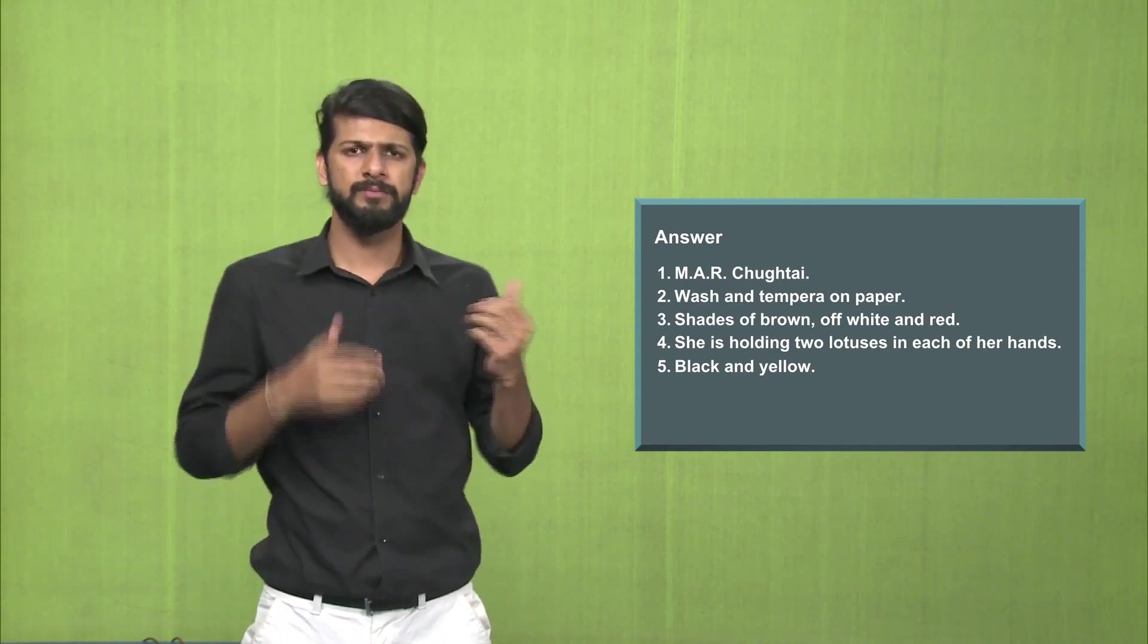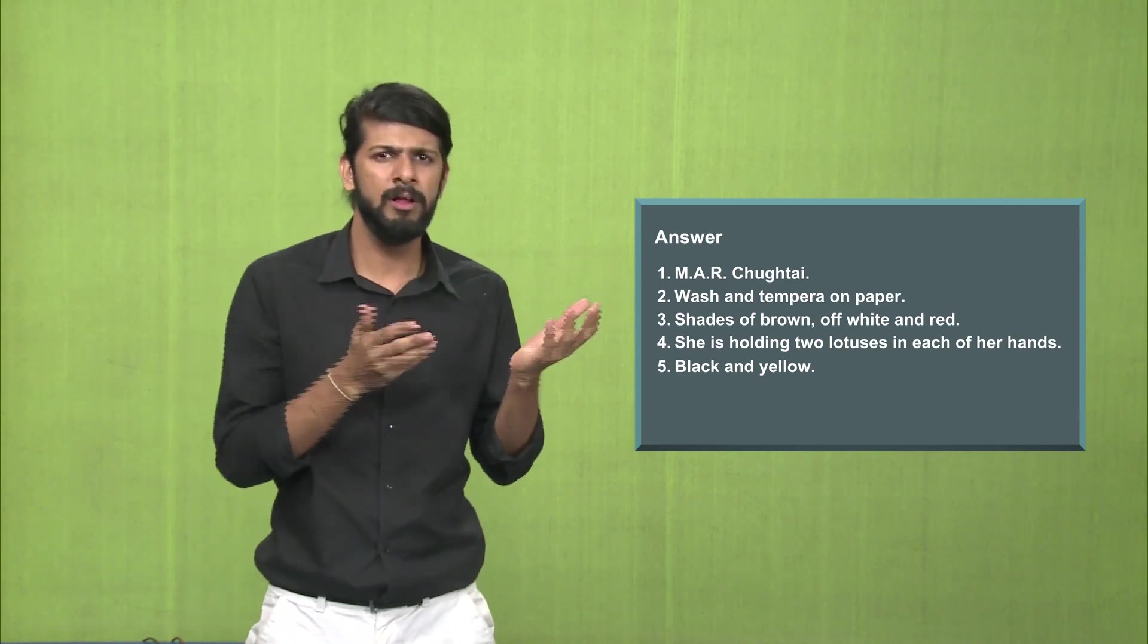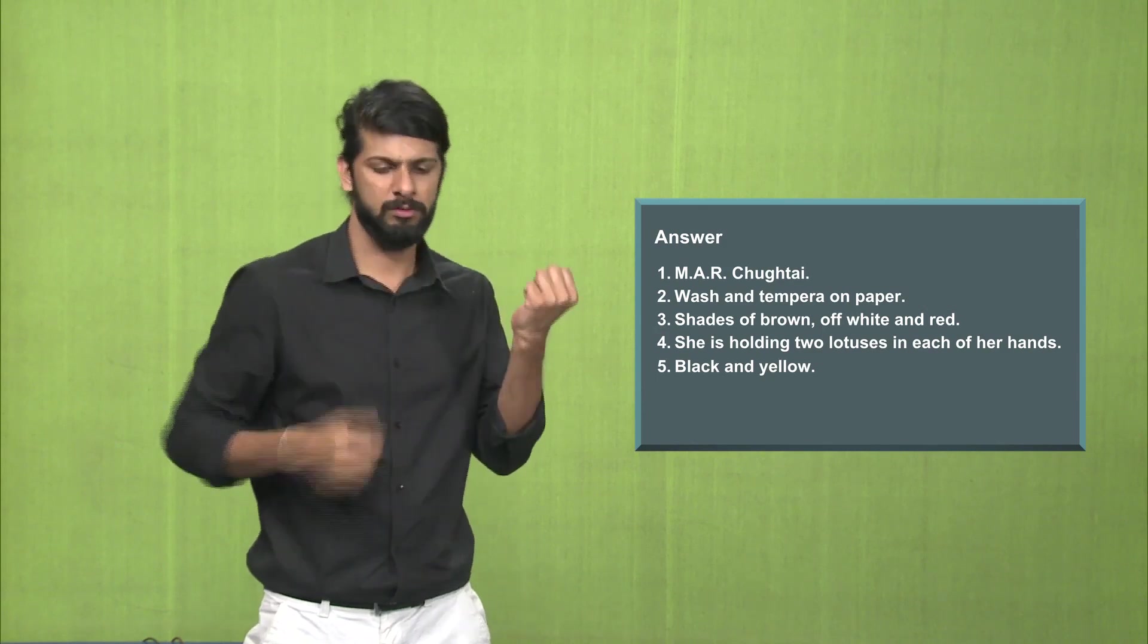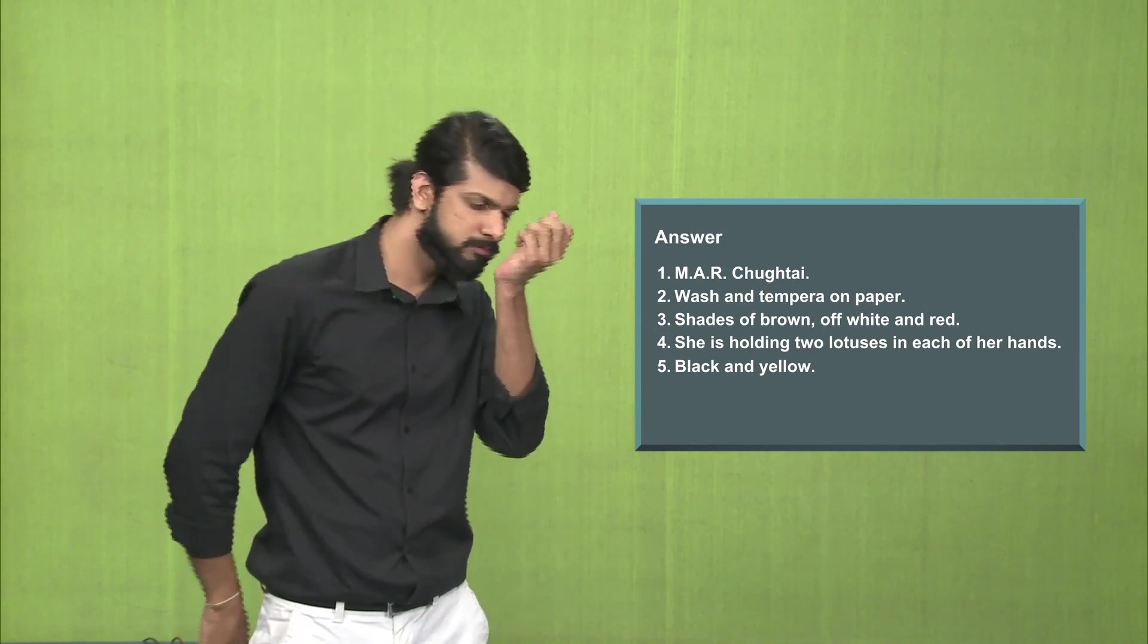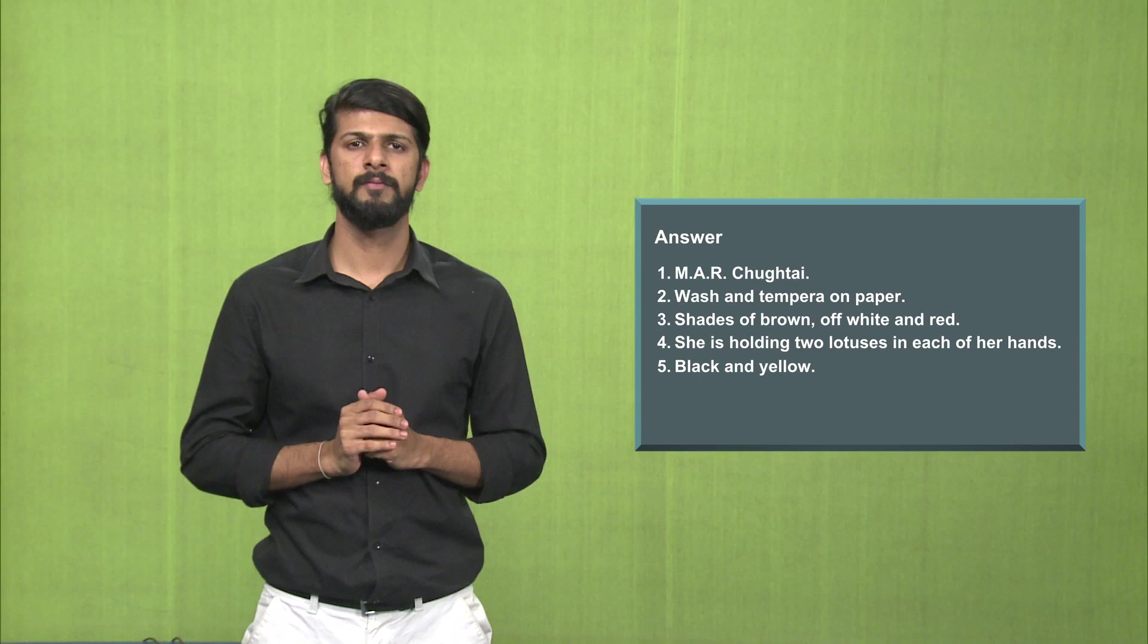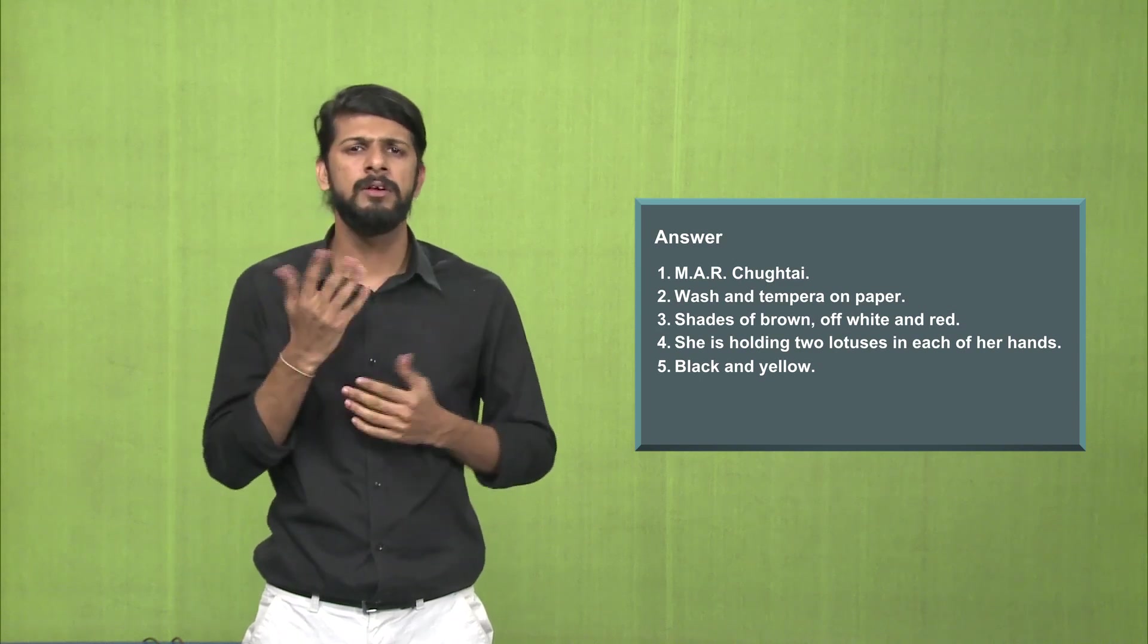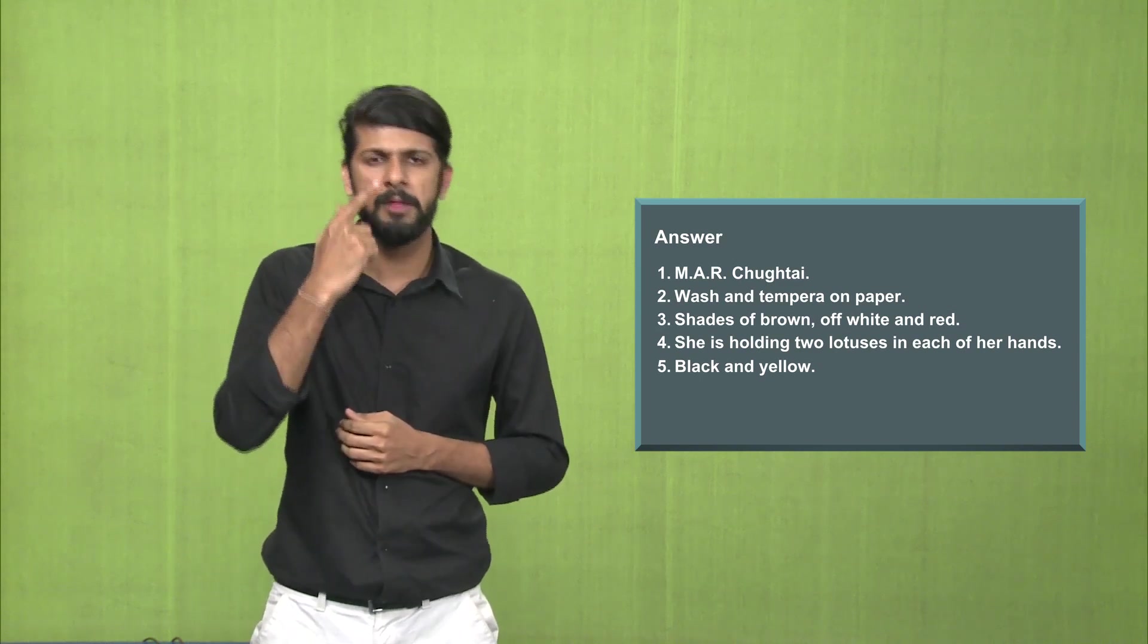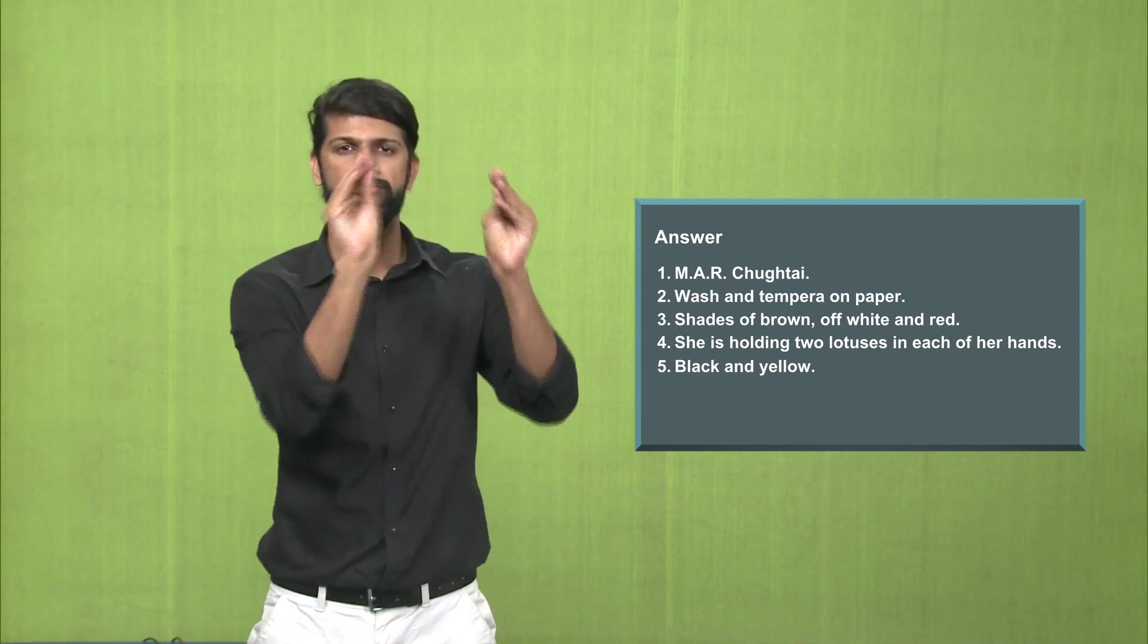Answer number 4, she is holding two lotuses in each of her hands. Answer number 5, the colors in the background are red, black and yellow.